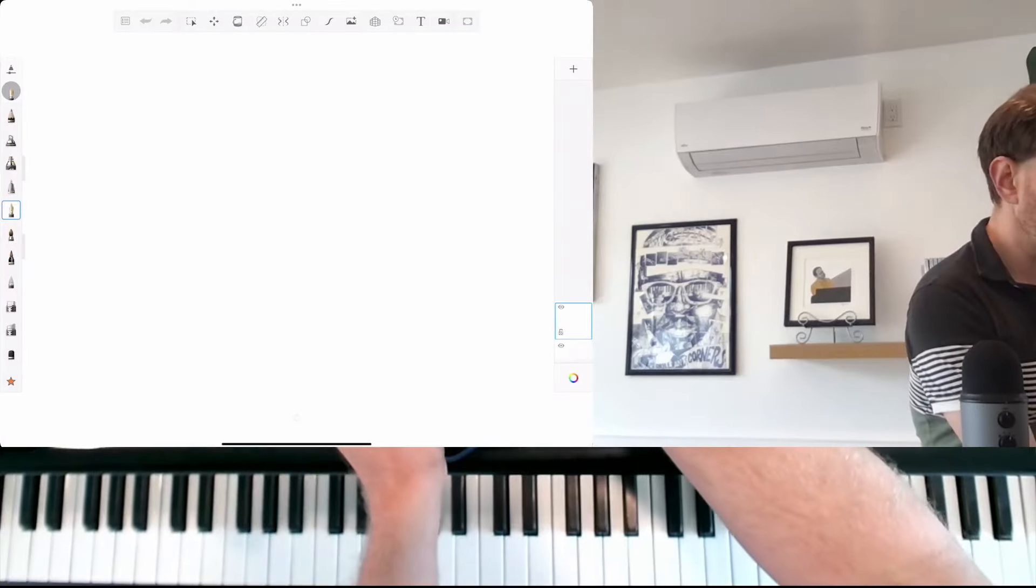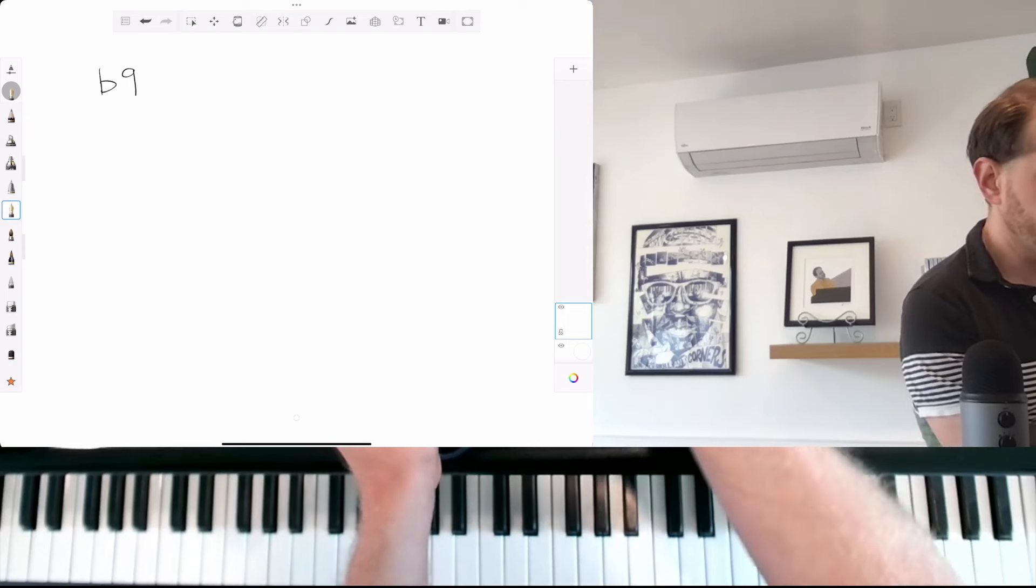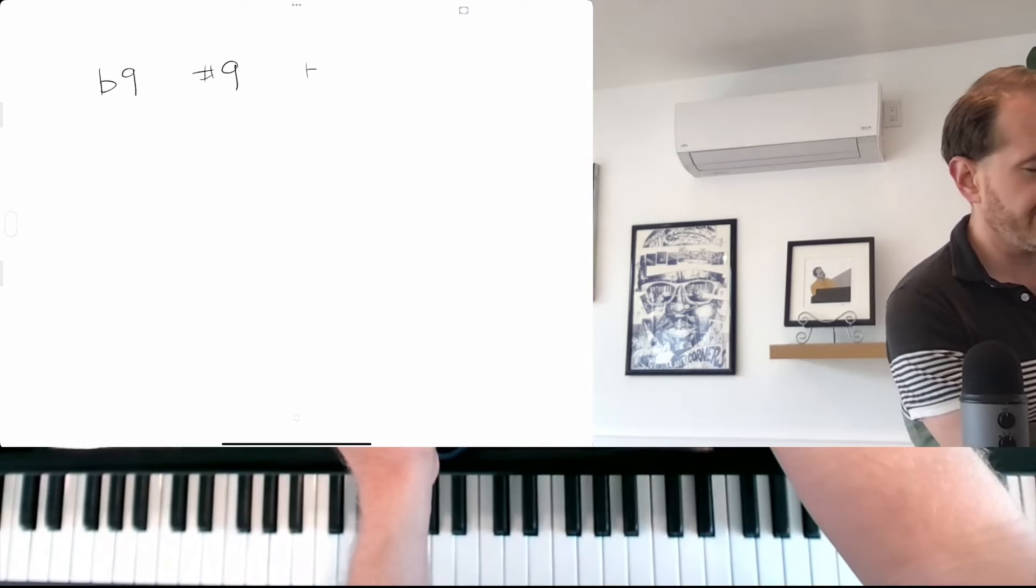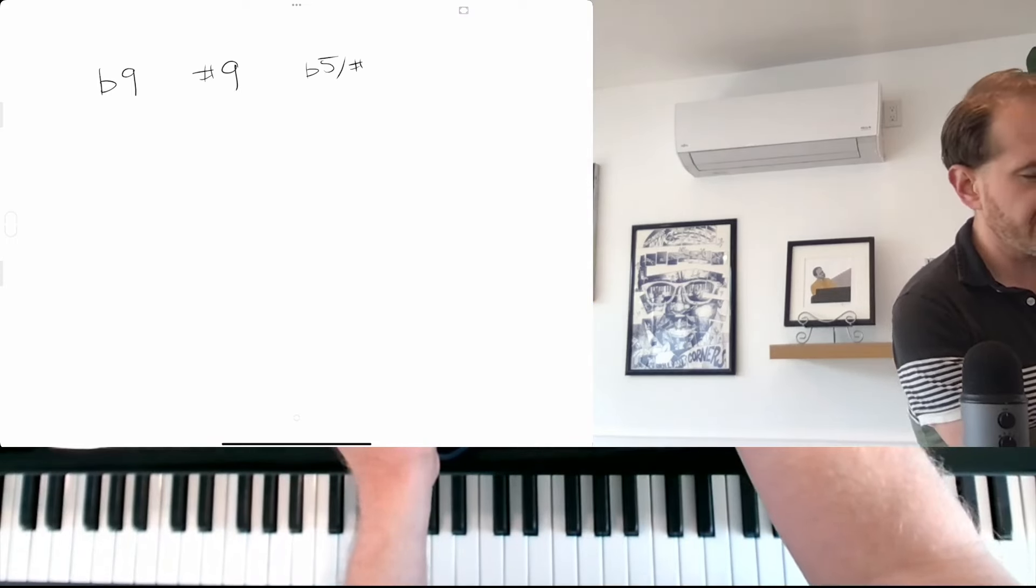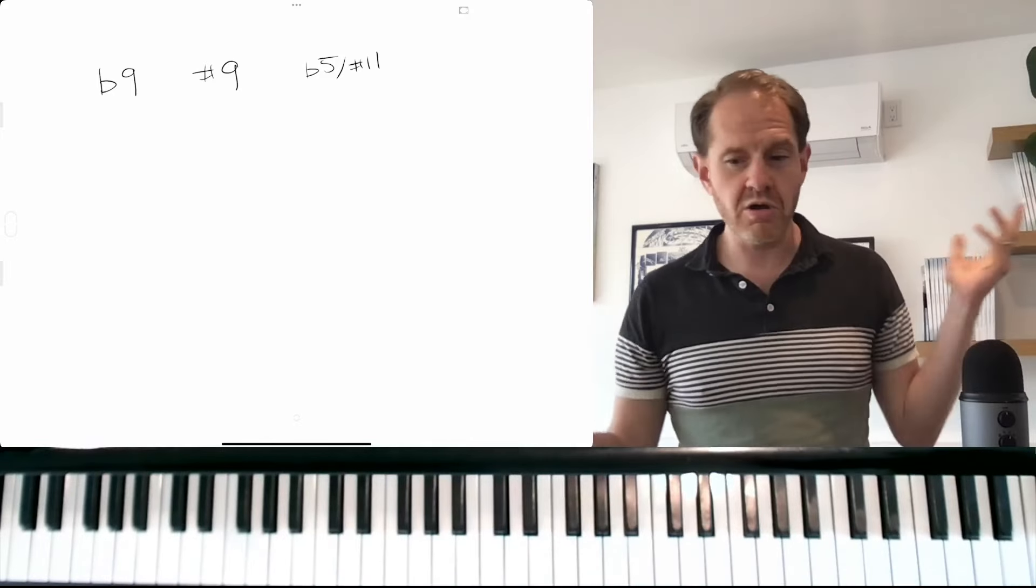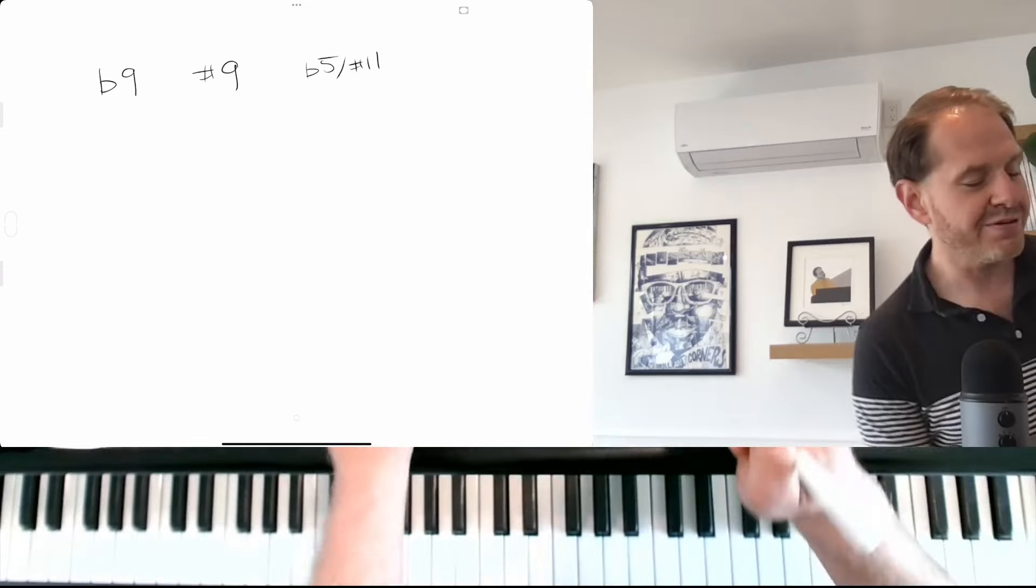So the reason I wanted to make this video is every semester I teach my students about altered tones. My take on altered tones is that there's basically four different tones that we can add to an altered dominant. We can add the flat nine, the sharp nine, the flat five or sharp 11 - these are two names for the same pitch, the pitch a tritone above the root.